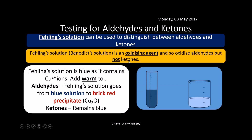Fehling's solution is blue as it contains copper(II) ions. If you add it warm to aldehydes, you get this blue solution turning to a brick red precipitate — this is copper oxide. It's placed in a hot water bath and this brick red precipitate is formed if we have an aldehyde. If we have a ketone, it just remains blue and nothing happens. Make sure you understand this setup and that we need a hot water bath.